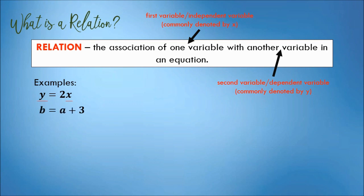Another example, we have b is equal to a plus 3. The first variable a is associated with the second variable b.